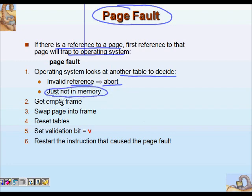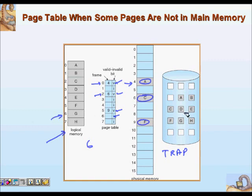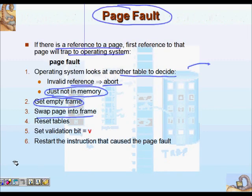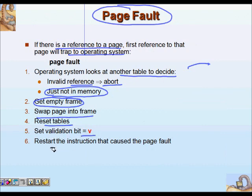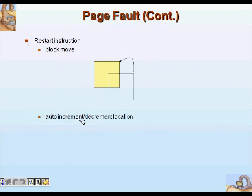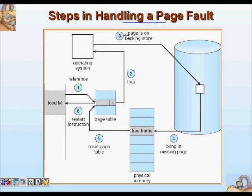If the page is not in memory, the operating system will bring it into memory for execution. To copy it from the hard disk, a free frame must be found first, then the page is swapped into that frame. For example, if page 6 needs to be accessed, it is copied from the hard disk to a free frame — say frame 7 — and the page table entry for page 6 is updated with that frame number and its valid bit is set to V. Then the instruction that caused the page fault is restarted.